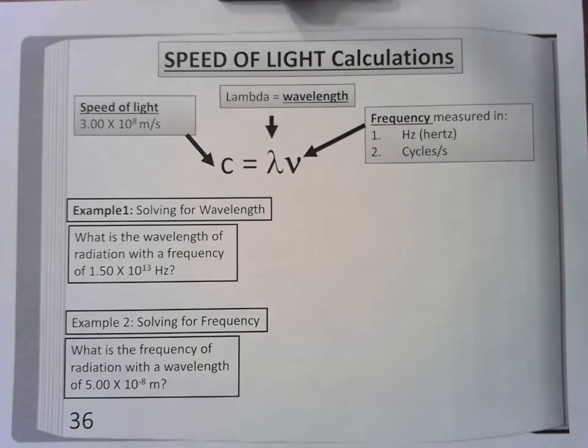This is lesson number two. We're going to start calculating using the speed of light formula. This is page 36 entirely, and I'm going to start with example number one.